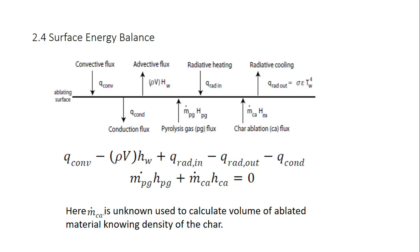For surface energy balance, we have as shown in the diagram the various components of energy entering and exiting the system. Here, what we need to find is the ṁca, which is mass of the ablated material. As we know this much amount of mass is ablated, we can find the volume of ablated material, which can be used to find the recession in boundary to model how much the boundary has receded backwards.